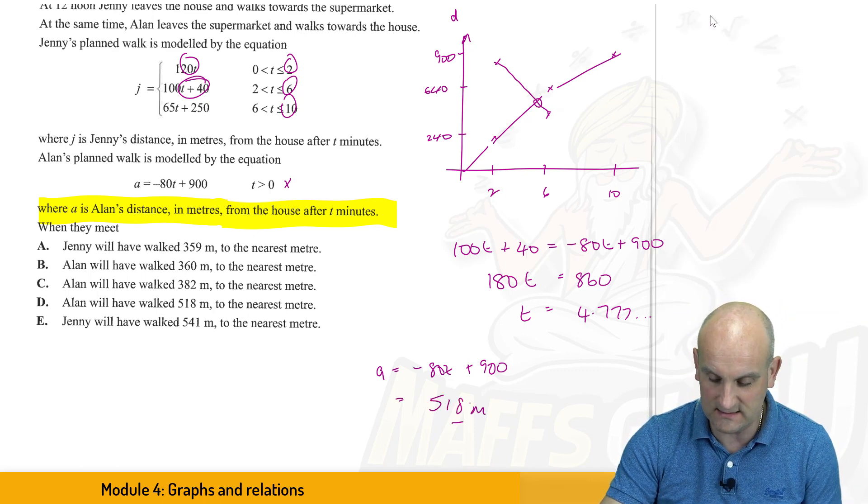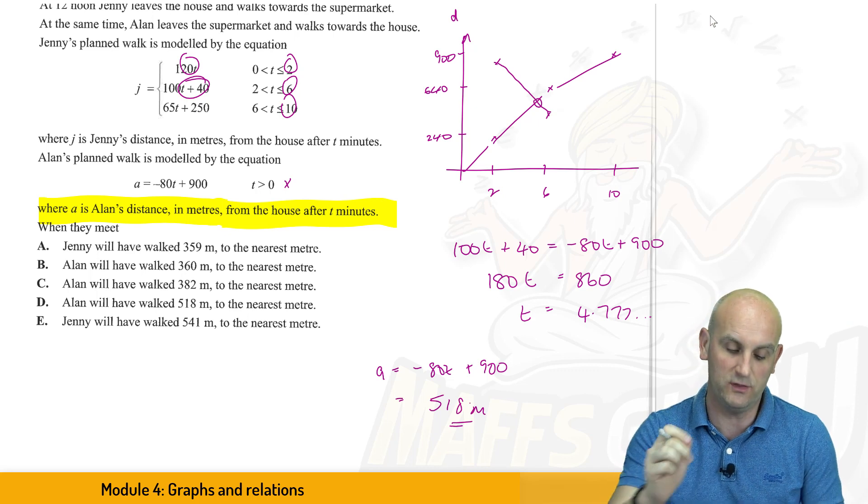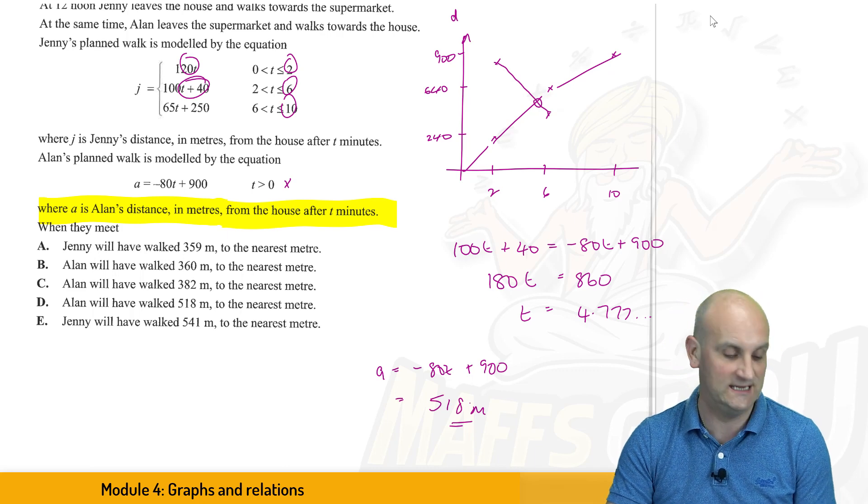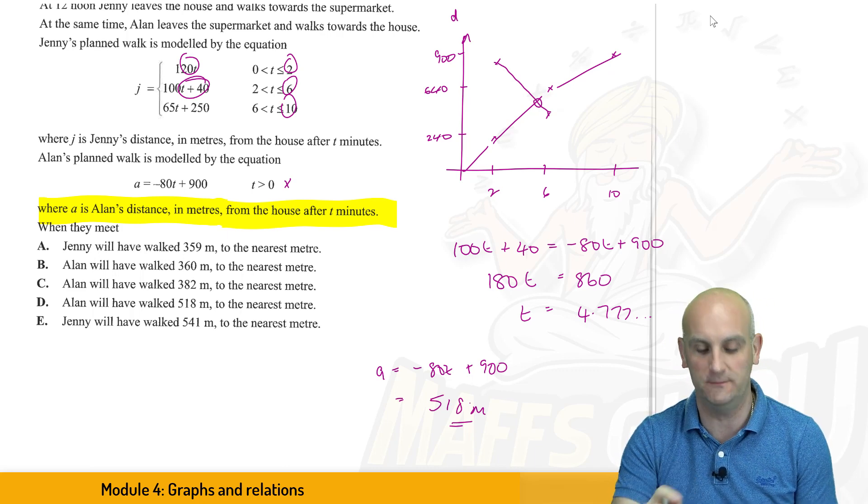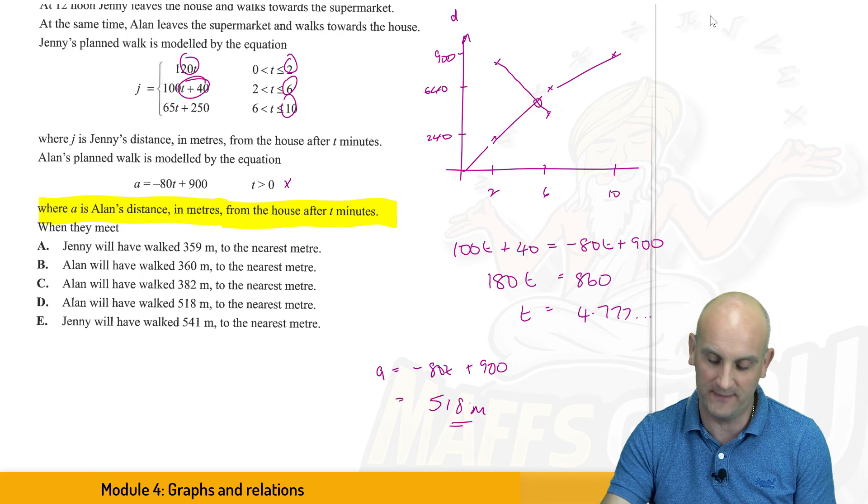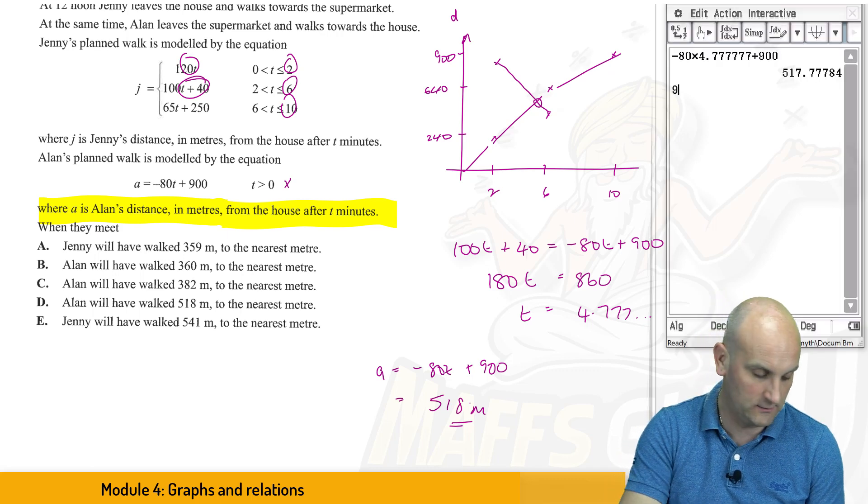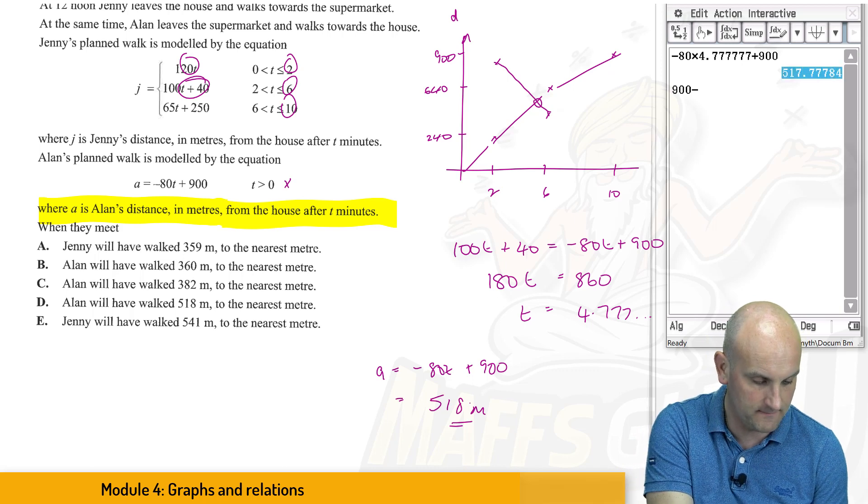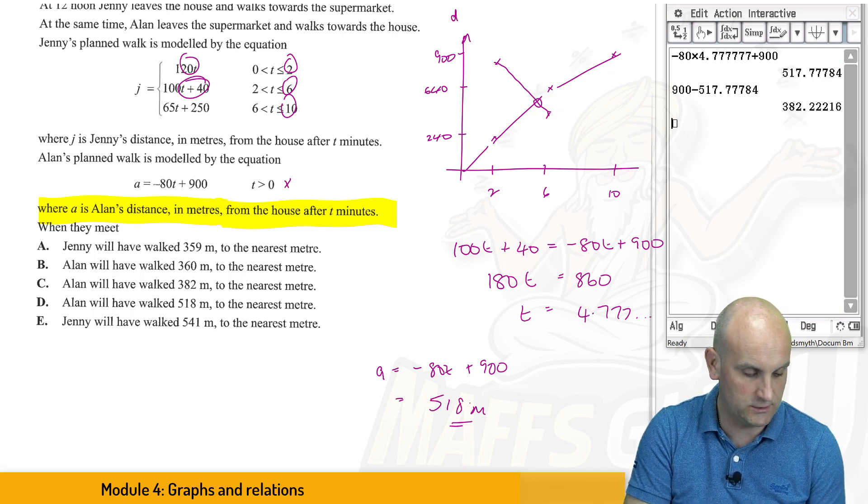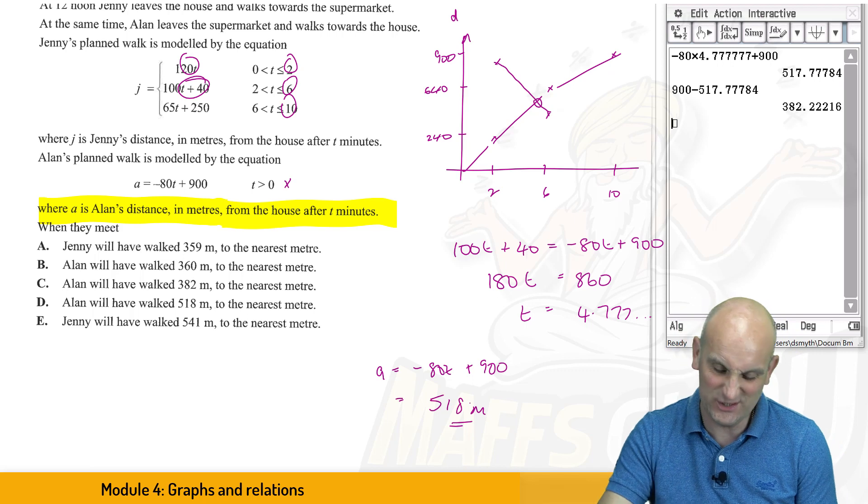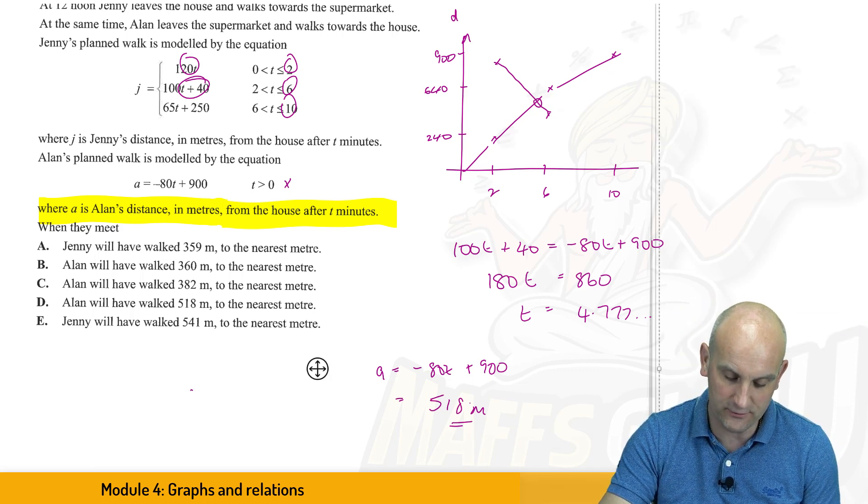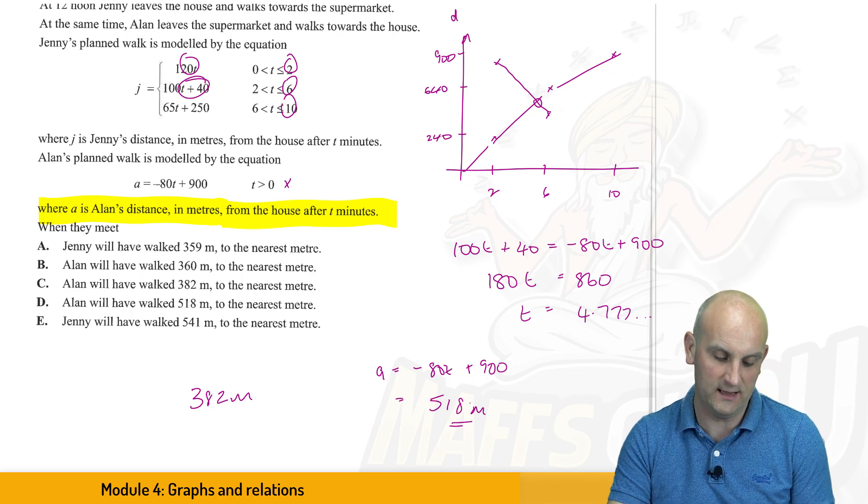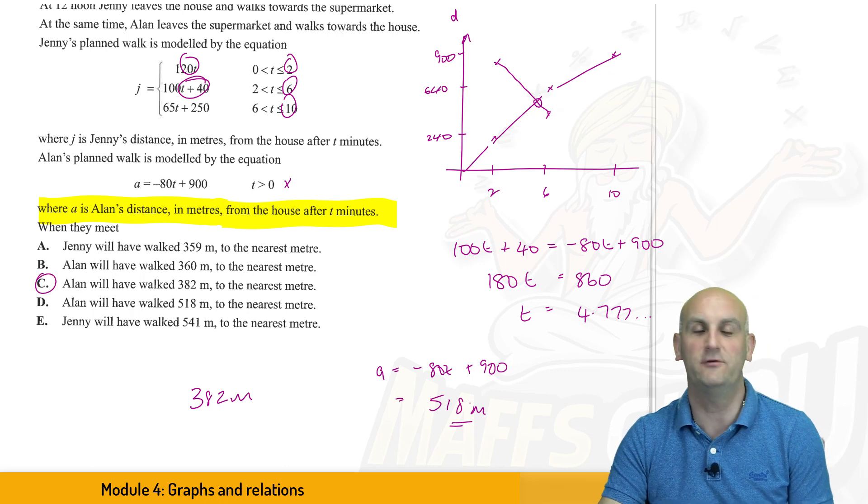So 518 meters seems to be my answer. And so you would think, well, there we go. I can highlight D. Nope, because that's actually 518 meters away from the supermarket. The question is, how far away is he from the house? So what I do is I'm going to do 900 minus that answer. Let's copy it in. Is equal to 382 roughly meters. So Alan is 382 meters from the supermarket. And there we go. Alan would have walked 382 meters.